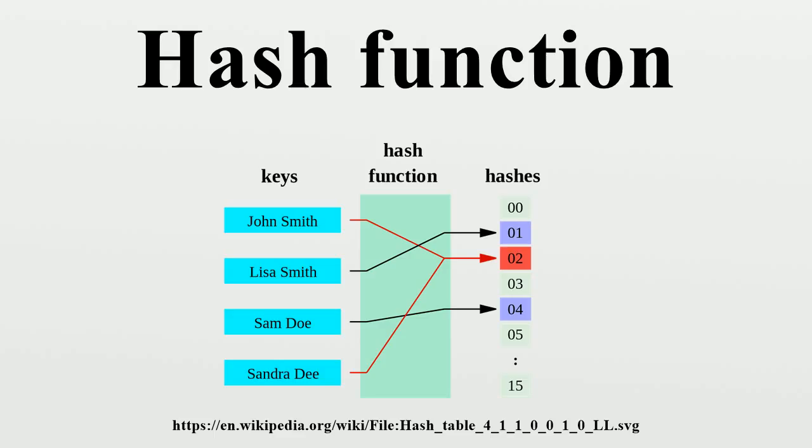For that purpose, one needs a hash function that maps similar keys to hash values that differ by most m, where m is a small integer. Then one needs only check the records in each bucket t-i against those in buckets t-i plus k, where k ranges between minus m and m.